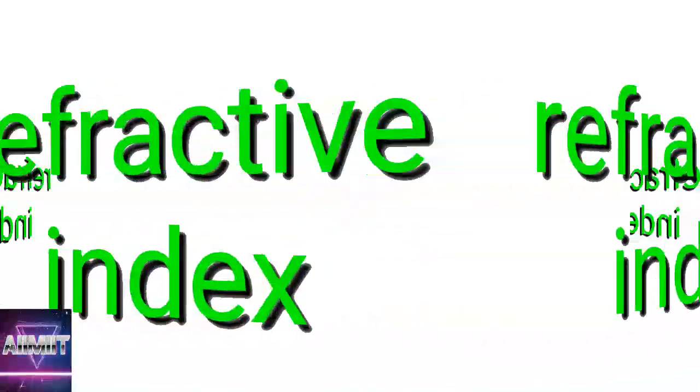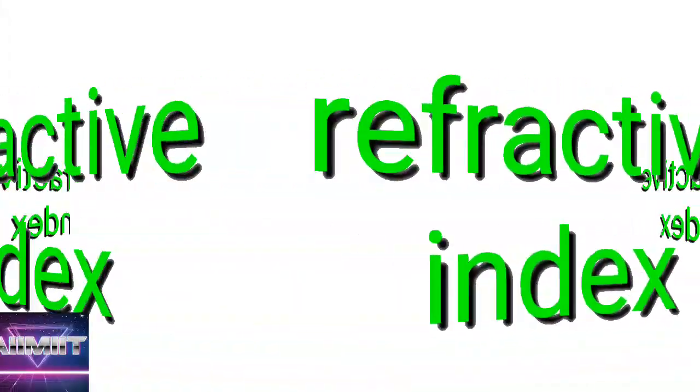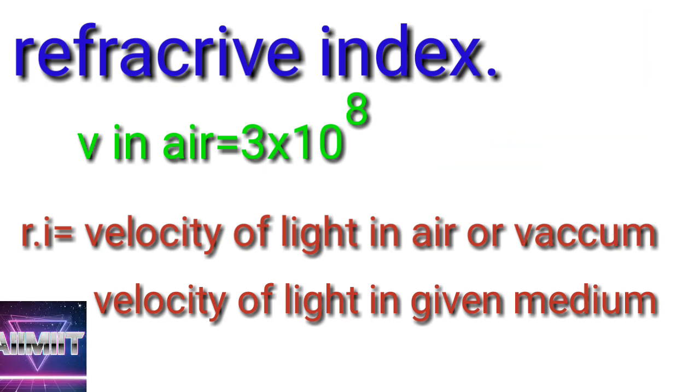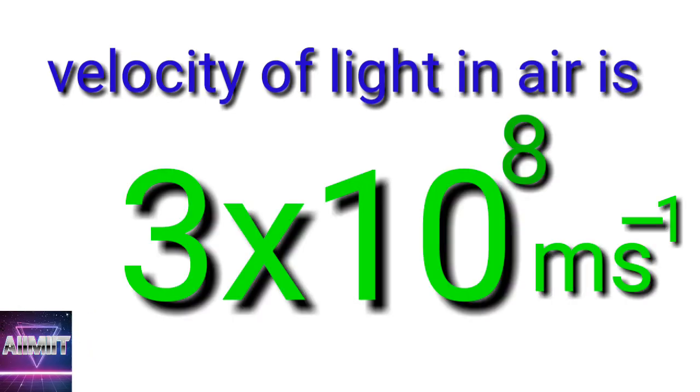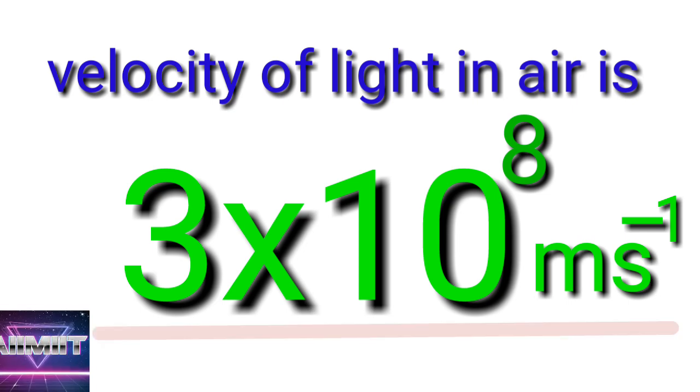Next, refractive index is velocity of light in air divided by velocity of light in given medium. Velocity of light in air is also called velocity of light in vacuum. You have to remember the value is 3 × 10^8 meters per second if they give or not. This is the value for velocity of light in air.